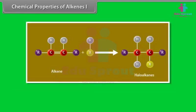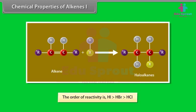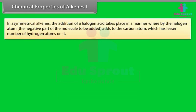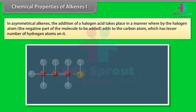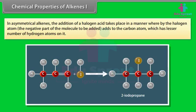Addition of Halogen Acids: alkenes with concentrated aqueous solution of halogen acids give haloalkanes. The order of reactivity is HI > HBr > HCl. In asymmetrical alkenes, the addition of a halogen acid takes place such that the halogen atom (the negative part) adds to the carbon atom which has the lesser number of hydrogen atoms. For example, in the case of propene, the product obtained is 2-iodopropane and not 1-iodopropane. This rule is known as Markovnikov's rule.